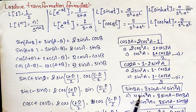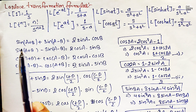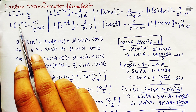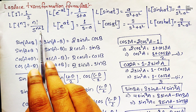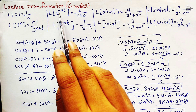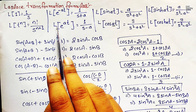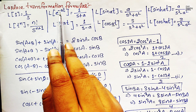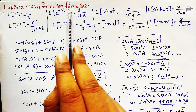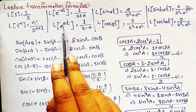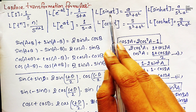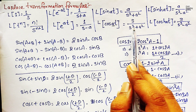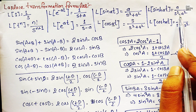Starting with the Laplace transformation formulas: Laplace transformation of 1 is 1/s, Laplace transformation of t to the power n is n factorial upon s to the power n+1. Similarly, Laplace transformation of e to the power −at is 1/(s+a), and e to the power at is 1/(s−a). For sine(at) we have a/(s²+a²), for cos(at) we have s/(s²+a²), and in hyperbolic functions the positive sign gets converted to negative sign.